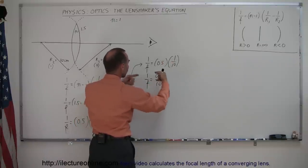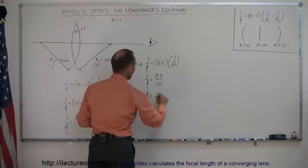And so we have 1 over F is equal to 0.5 times 1 is 0.5 over 10. And then if we turn the equation around, we get F over 1 is equal to 10 divided by 0.5, or F is equal to 20.